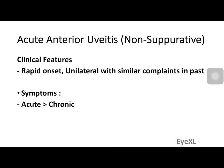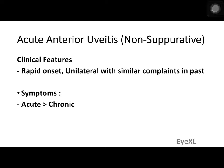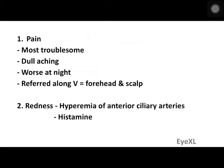The clinical features of acute anterior uveitis are of rapid onset, usually unilateral, with similar complaints in the past because uveitis shows a pattern of relapse and remission. So the patient is likely to give a history of similar complaints in the past. The symptoms are more often seen in acute cases as against chronic.